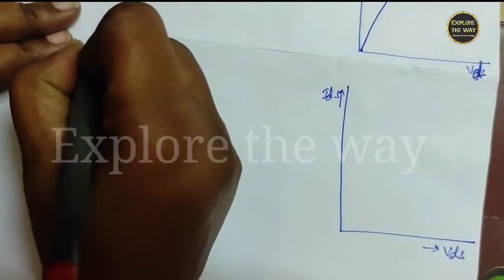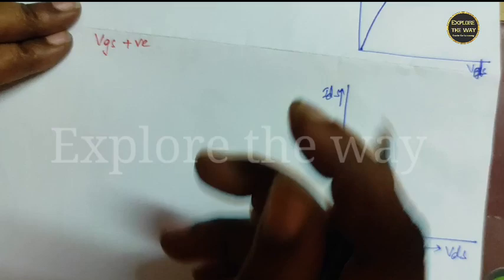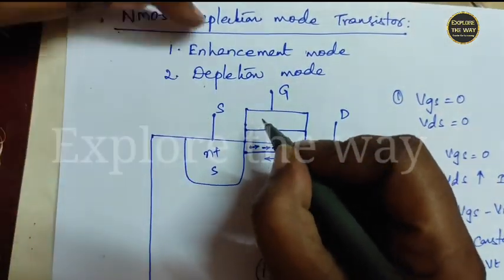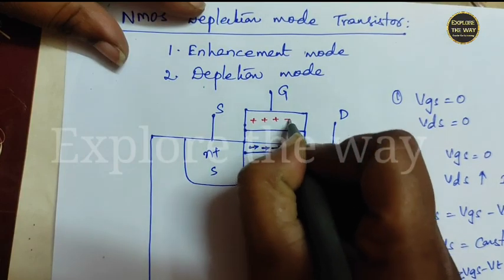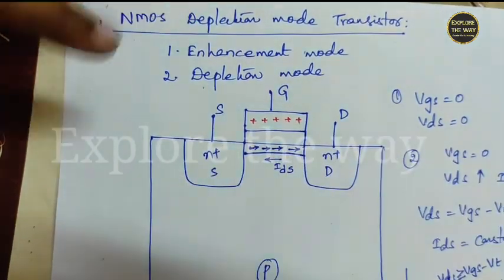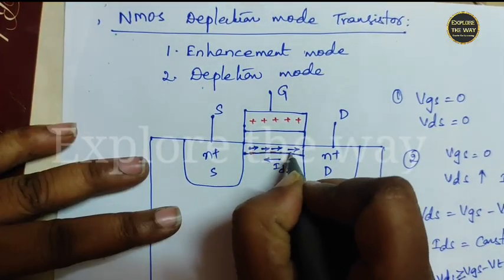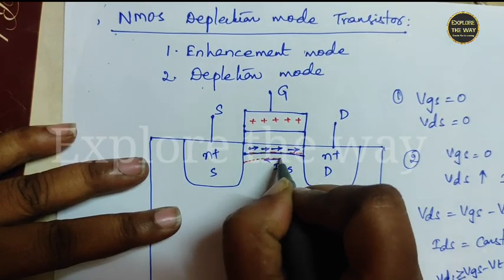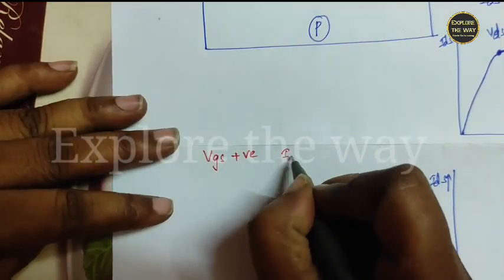After that, as VGS increases, that means make VGS positive, in the gate structure, this gate region becomes positive. And it attracts more and more negative carriers from the substrate. So, here the negative carriers increase, the width of the channel gets increased. Thereby, IDS also increases.